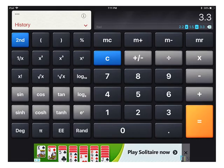If I wanted to check it, I could again use my calculator. I have 2.2 times 1.5, which would equal 3.3.